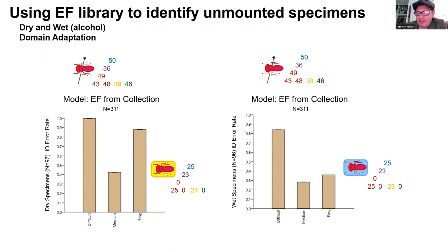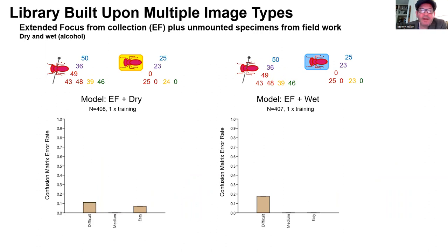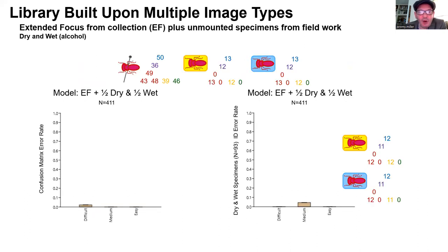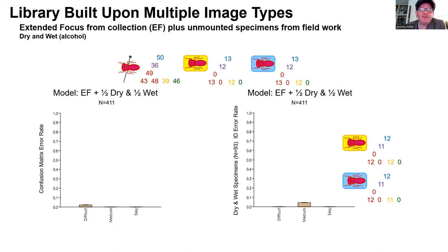Our ability to identify unmounted specimens using our museum collections-based library was quite poor. However, when we combined our fresh specimens with the museum collections library, the confusion matrix suggested significant improvement. We built a composite image library using half of the wet and dry specimens and the museum collection images, then used this more diverse library to identify the remaining half of the field-collected specimens, and the results were indeed very promising. This suggests that image libraries based on a combination of sources, including but not limited to museum collections, can create synergies that ultimately lead to more reliable results.